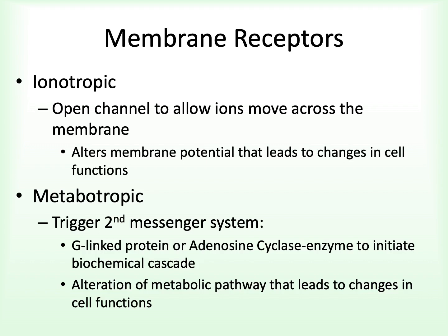The other type is the metabotropic receptor, which triggers what are referred to as secondary messenger pathways. These turn on or turn off enzymes by activating a membrane protein, usually referred to as a G-linked protein. That activation triggers a biochemical cascade of events which alters the metabolism of the cell and thereby alters the function of the cell.